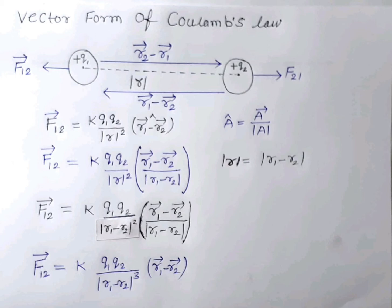The vector form of Coulomb's law for these forces can be written as the magnitude of force with the unit vector. F12 vector equals k·q1·q2 divided by |r|² multiplied by the unit vector of (r1 − r2). Recall that the unit vector â equals vector a divided by |a|.